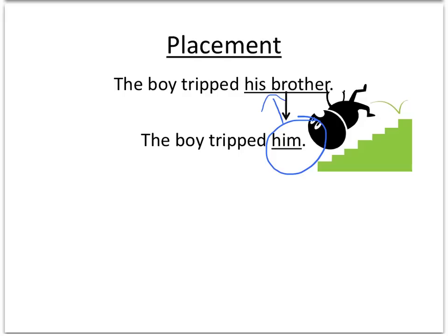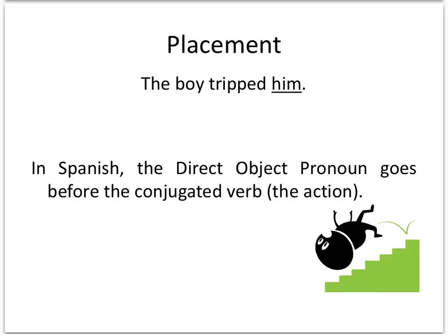Unfortunately for the English speaker learning Spanish, Spanish is actually a little bit different. It doesn't go exactly where the direct object was — it's going to go somewhere slightly different. This is exactly the part that takes some practice. So in Spanish, the direct object pronoun — in this case him, which by the way we would choose lo from our chart — it goes in front of the conjugated verb.